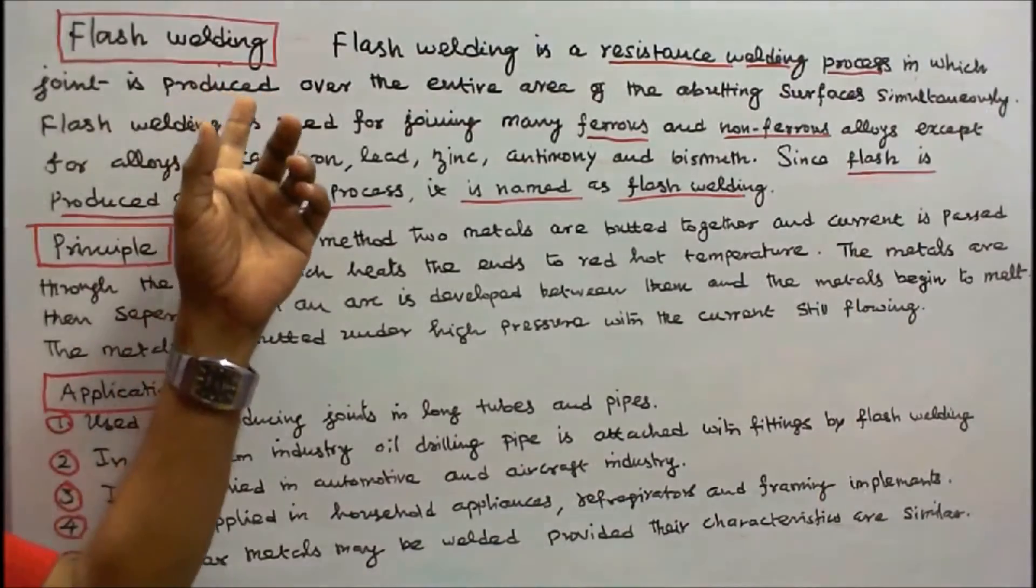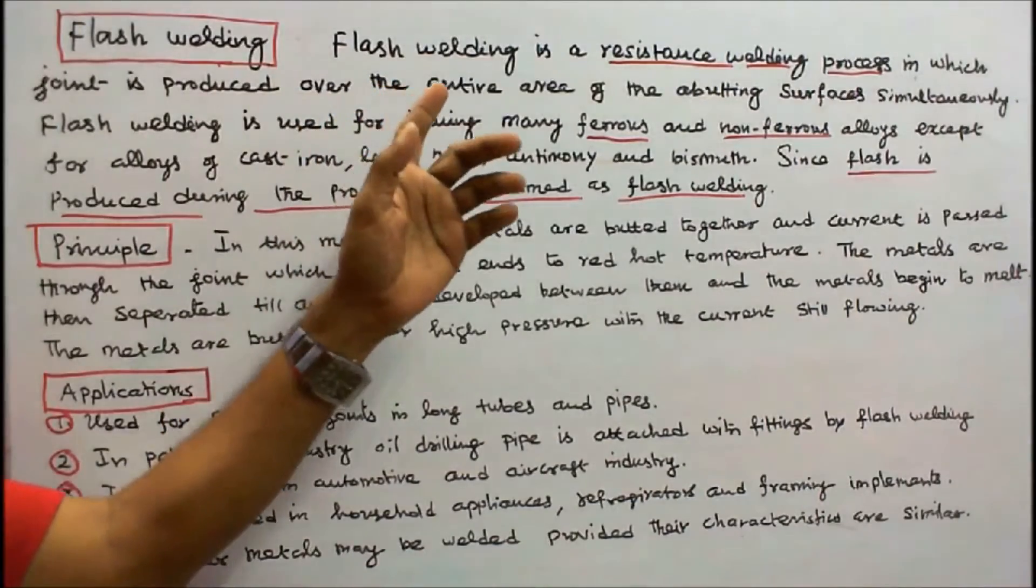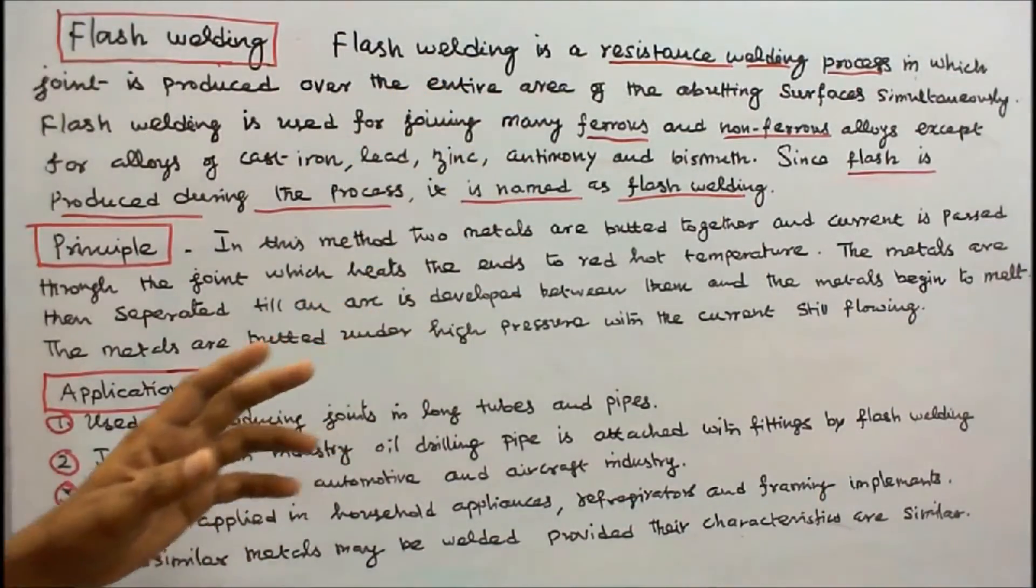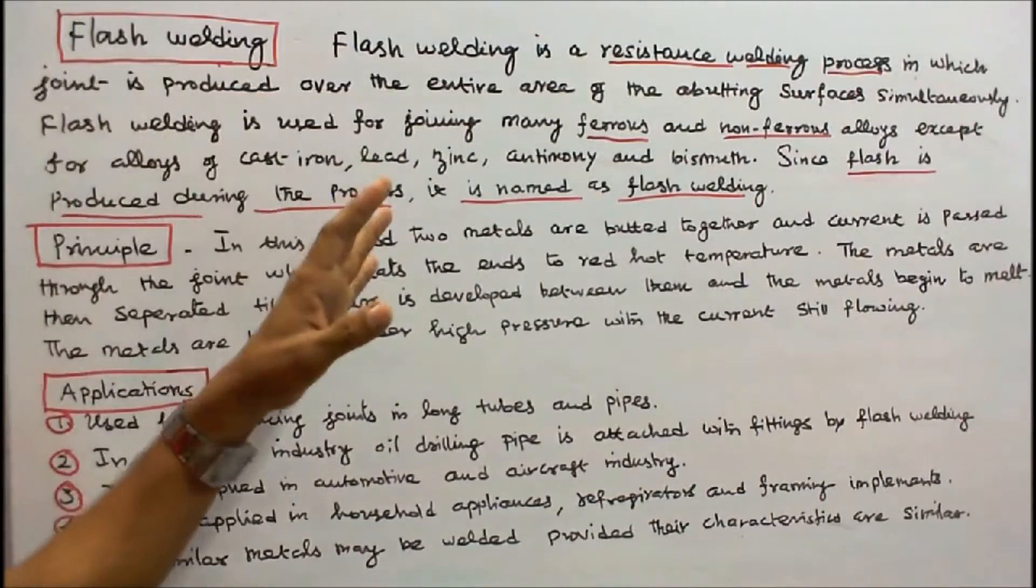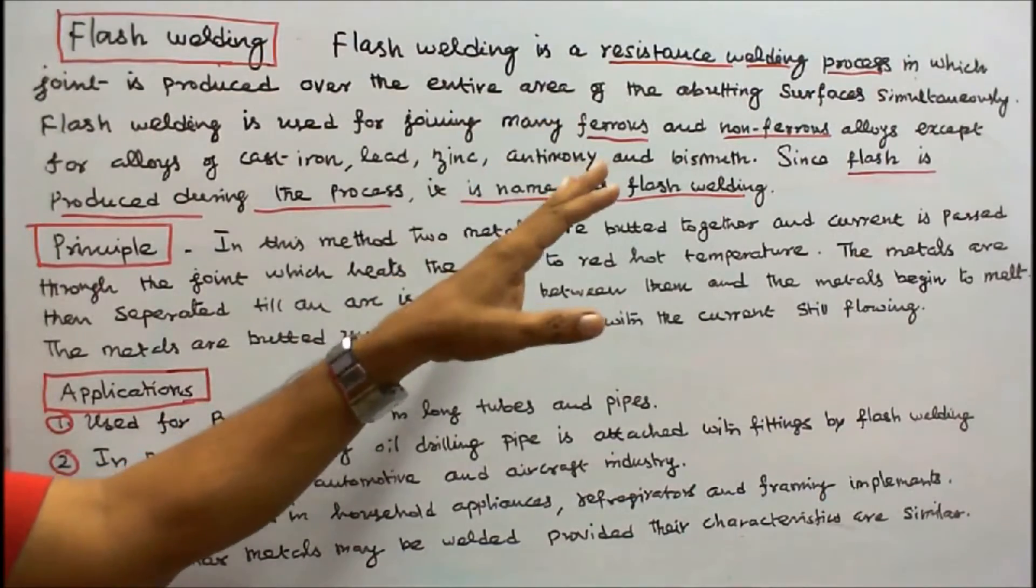This class we discuss about Flash Welding. Flash welding is a resistance welding process in which joint is produced over the entire area of the abutting surfaces simultaneously.